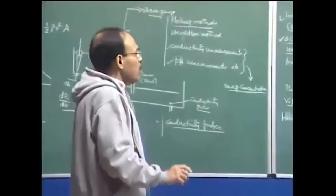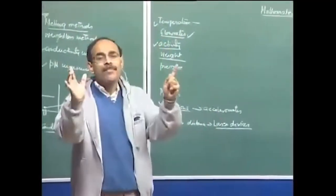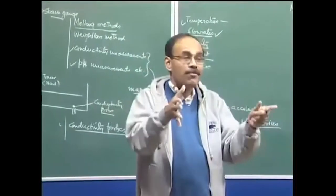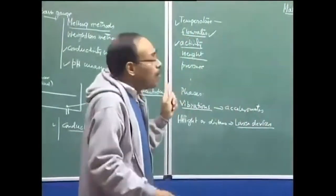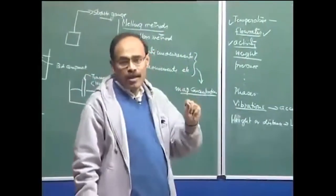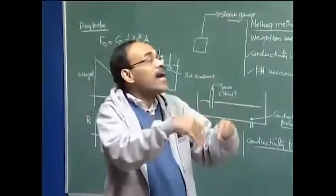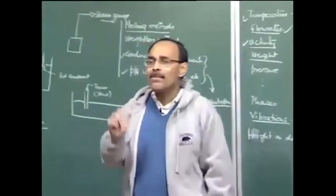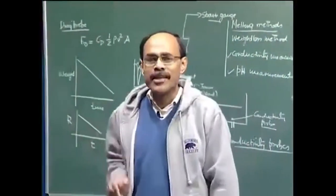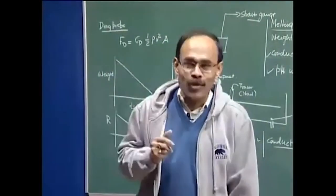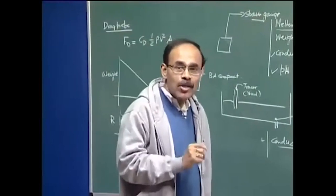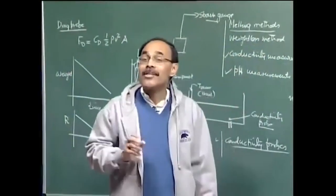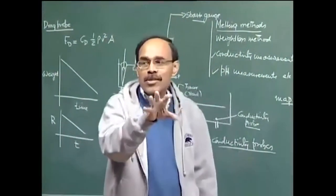Coming to mathematical modeling: in physical modeling we represented the process in terms of an actual physical replica with different scale and different material. Now we wish to represent a given phenomenon and system in terms of a mathematical model — either a differential equation or an algebraic equation. Merely saying 'I want a mathematical model of an LD converter' is an ambiguous statement. You have to specifically mention what process or phenomenon is being represented.